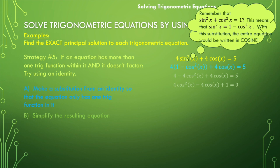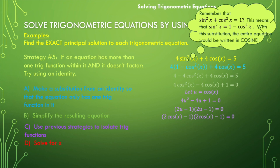Treat it like a quadratic and replace cosine of x with u. We end up with four u squared minus four u plus one is equal to zero. That factors as two u minus one times two u minus one, also known as two u minus one quantity squared. Replace u with cosine of x and solve. Since both factors are the same, set it equal to zero once: two cosine of x minus one is equal to zero. Add one and divide by two — cosine of x is equal to one half. That happens at pi over three and five pi over three.